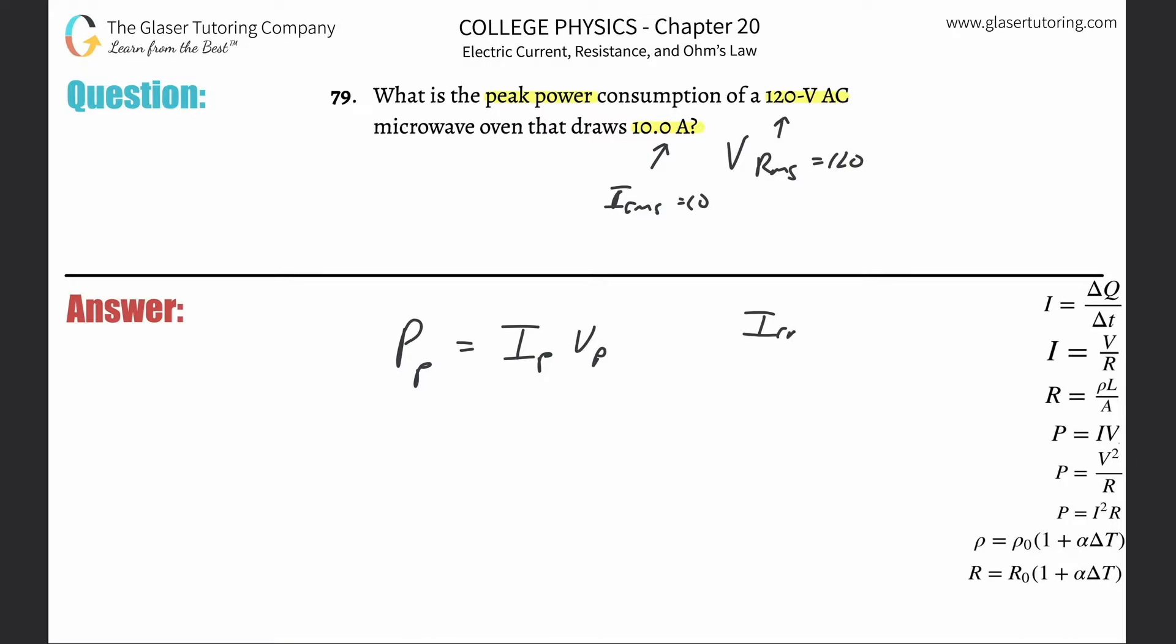So the root mean square current is going to simply be equal to the peak current divided by root of two. That's the same exact formula for the voltage. So what I'm going to do instead is just put in a V.